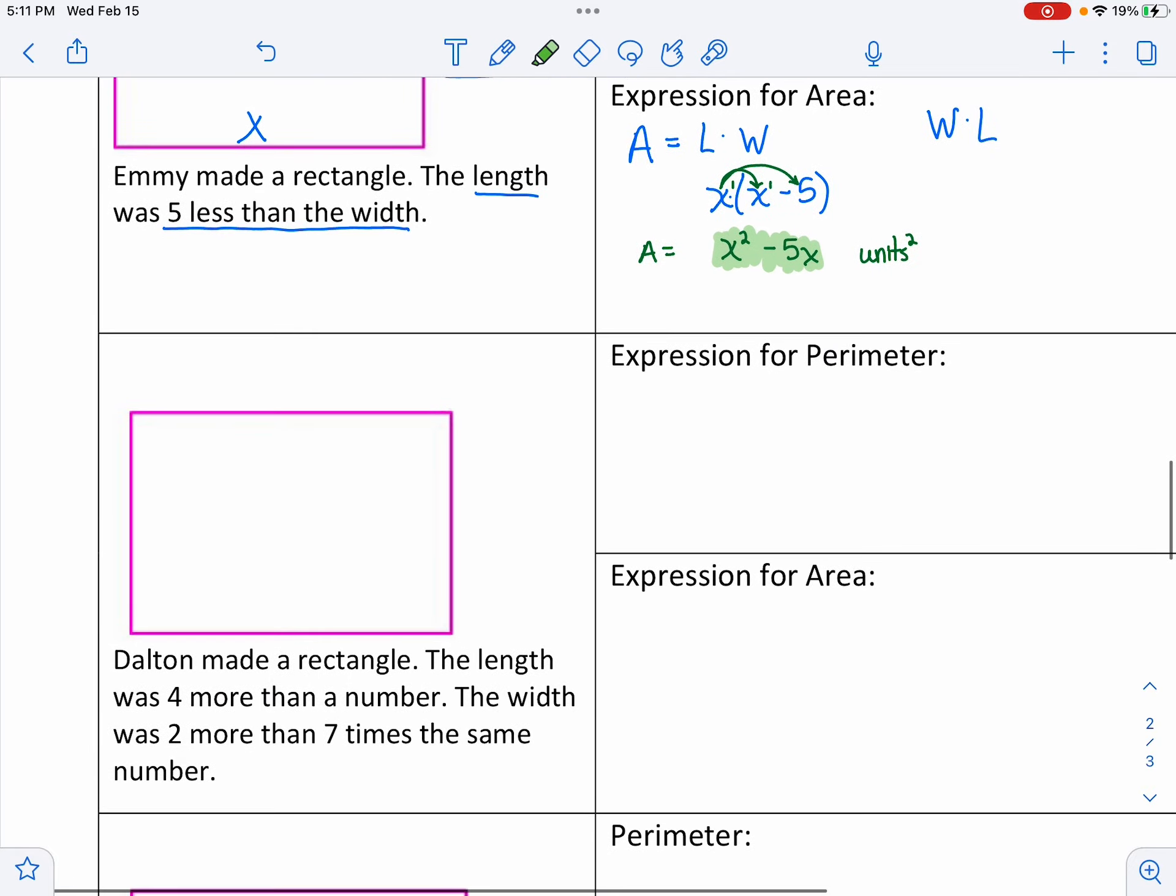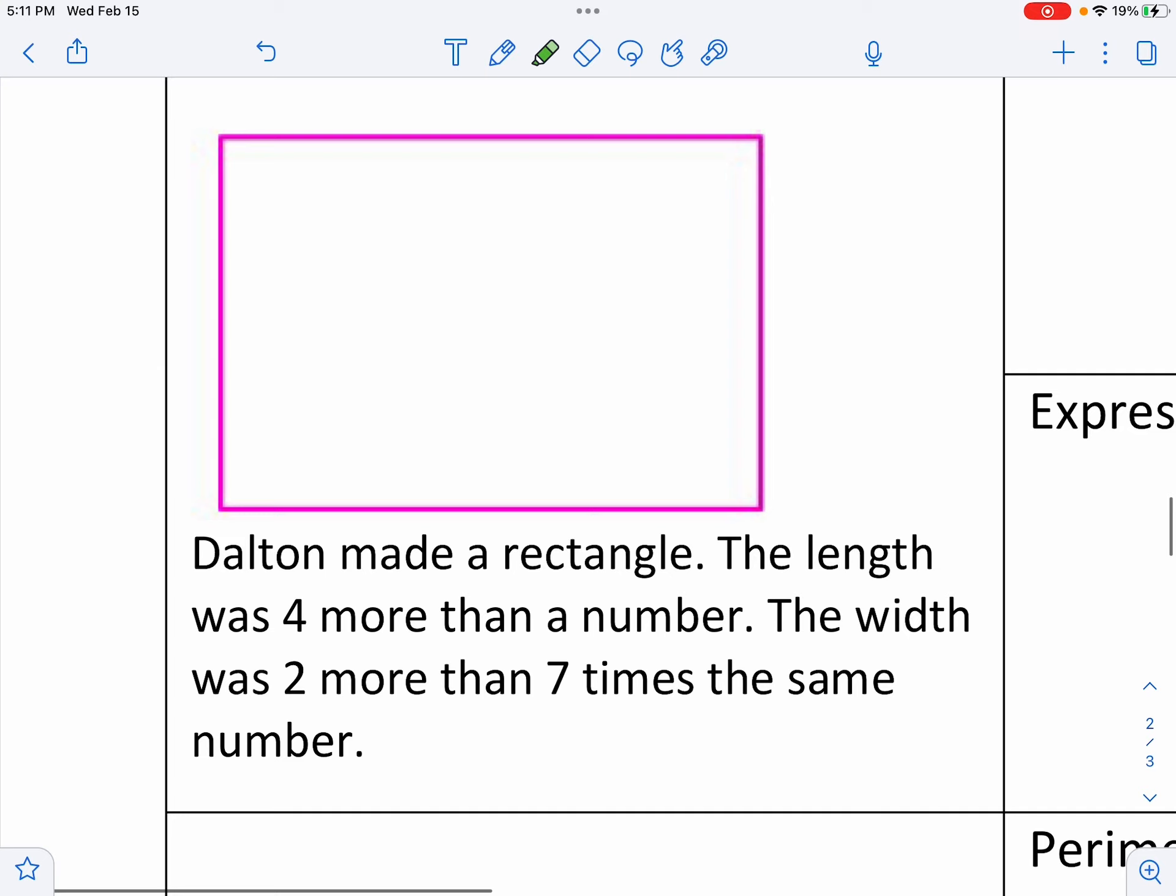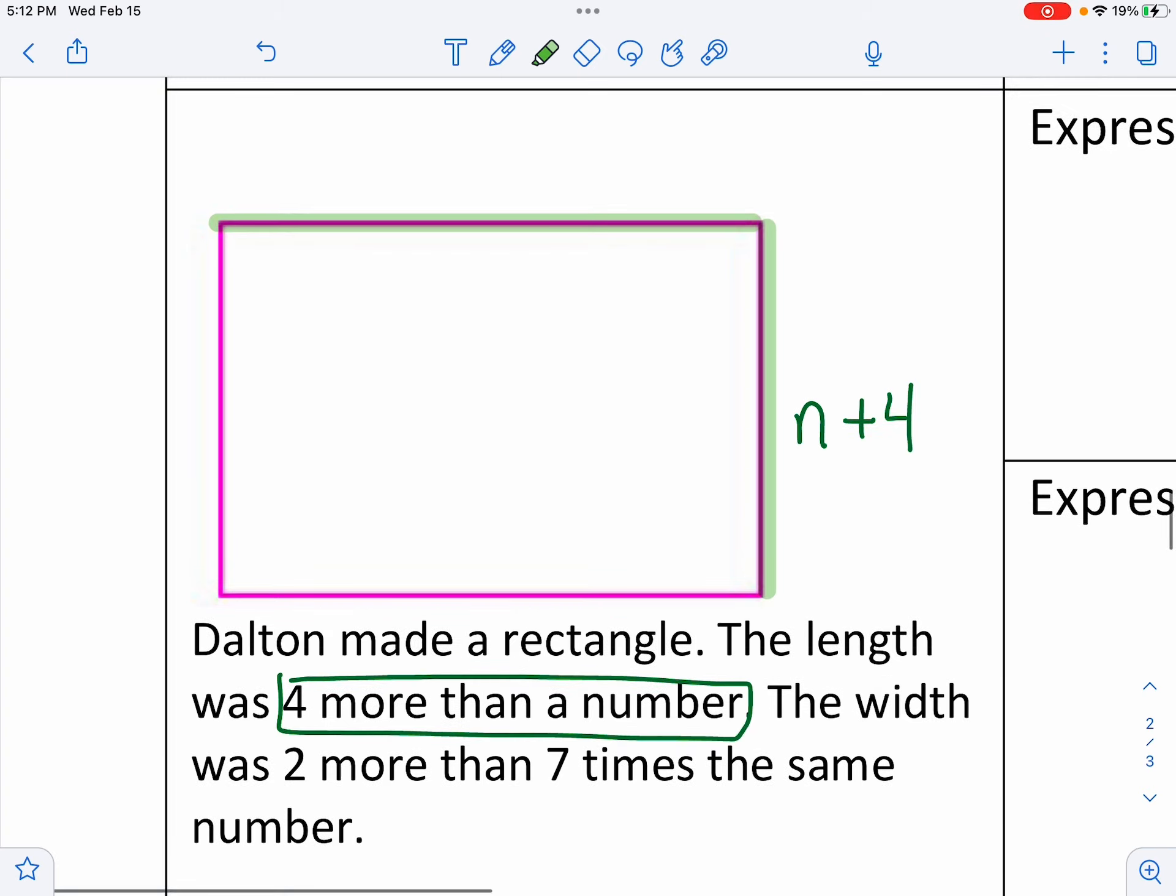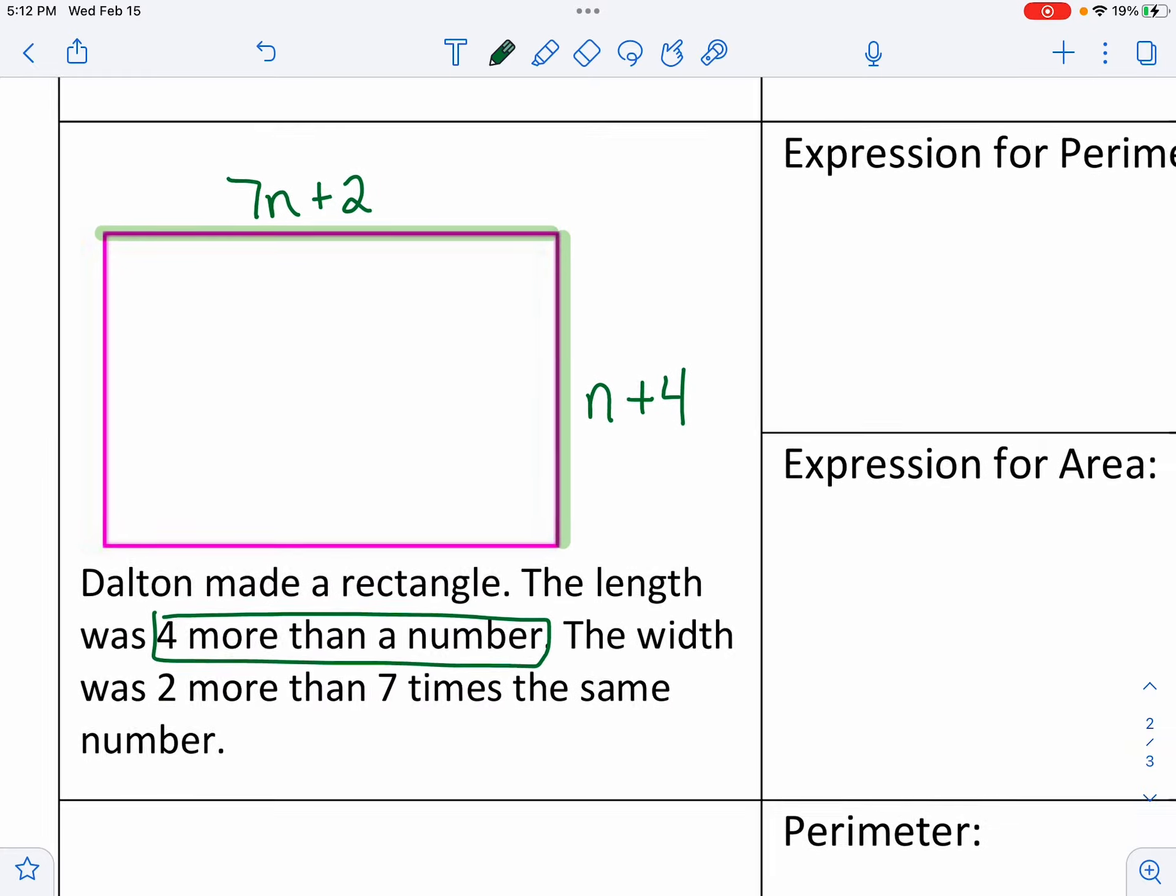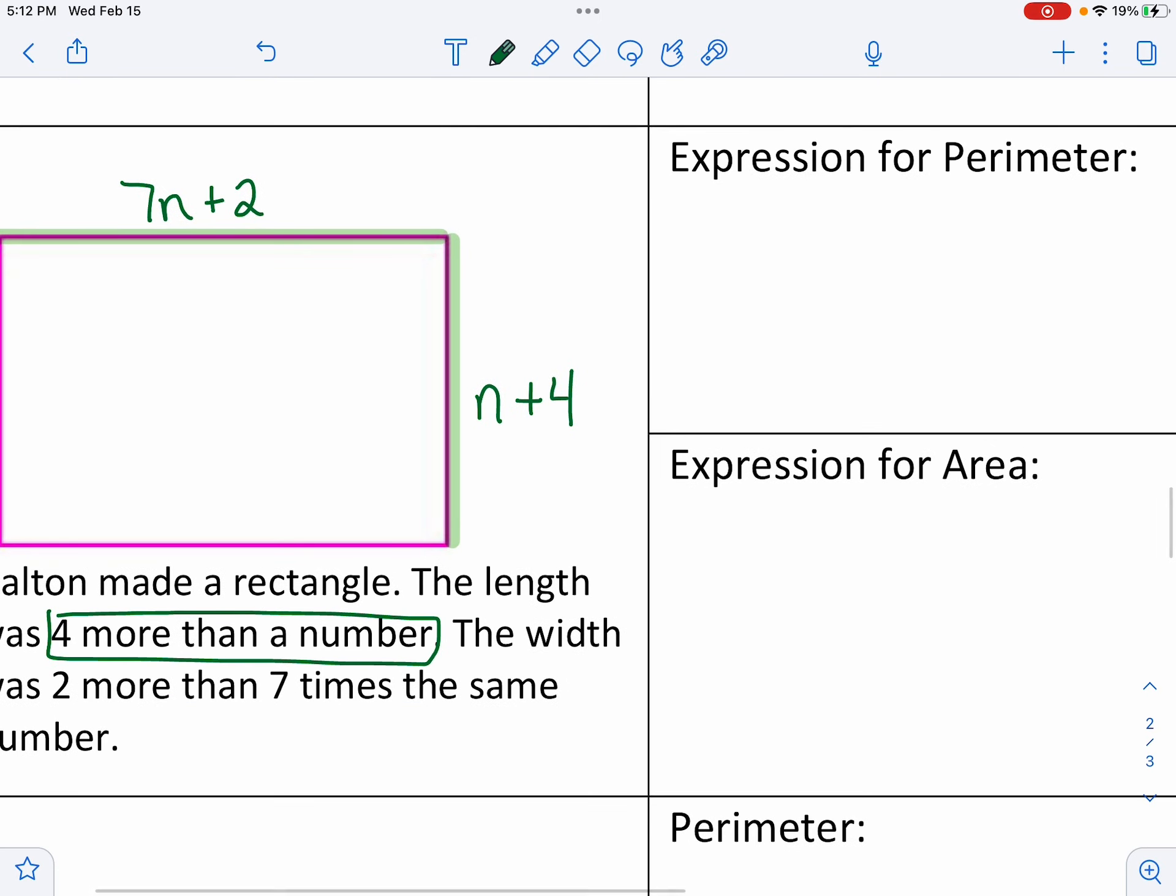Now let's look at the third example. Dalton made a rectangle. The length is 4 more than a number. So I'm going to do 4 more than a number. Now some of you are like, why aren't you using x? I guess I just didn't feel like it. They don't tell us what to use. The width is 2 more than 7 times the same number. So here's 2 more than 7 times the same number. That was discussed with you back in earlier chapters and in middle school. But sometimes I think it's kind of like a forgotten skill, so I wanted to put it on there.